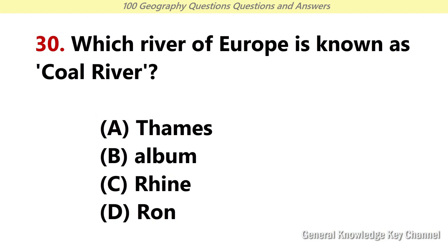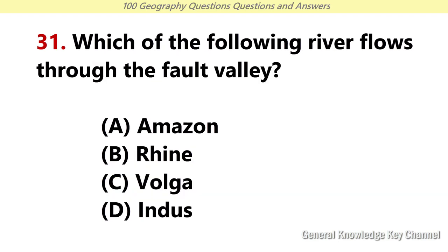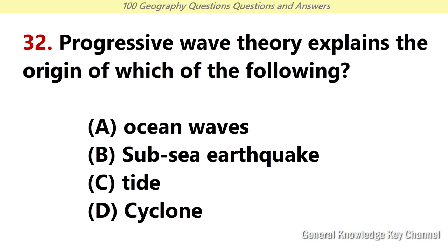Which river of Europe is known as Coral River? Answer C: Rhine. Which of the following rivers flows through the Volga Valley? Answer C: Volga. Progressive wave theory explains the origin of which of the following? Answer C: Tide.